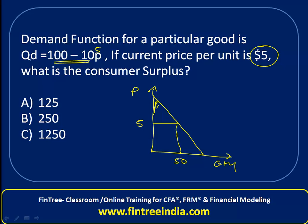Consumer surplus is the area of this triangle. The area of any triangle is one-half times height times base. Since this distance is 50, the base of the triangle is also going to be 50.